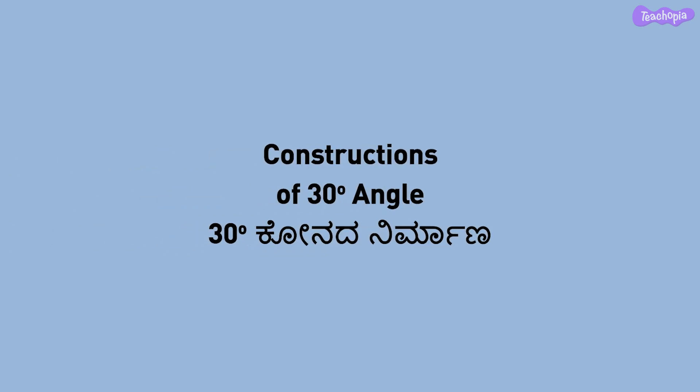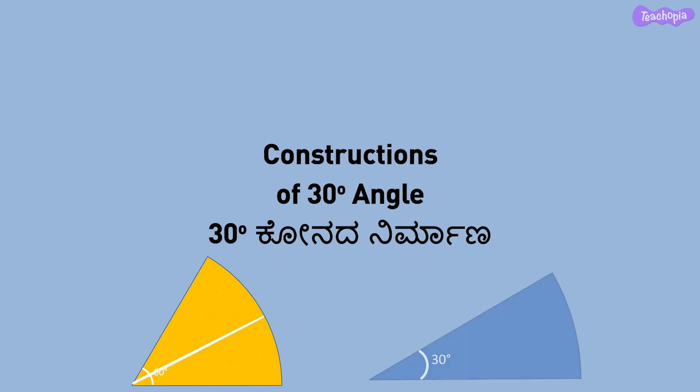Construction of a 30 degree angle. A 30 degree angle is a part of a full rotation and is exactly half of 60 degrees. To draw a 30 degree angle, we first draw a 60 degree angle and then divide it into two equal parts. Let us see how to do this to get a 30 degree angle.